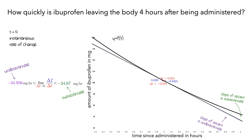Although we haven't come up with a single number for the instantaneous rate of change of the amount of ibuprofen with respect to elapsed time, we can say that this limit of the slopes of the secant lines — which we write as f'(t) — is between the under- and over-estimates. We've now seen a method using average rates of change to compute overestimates and underestimates to find a range of possible values for the instantaneous rate of change.